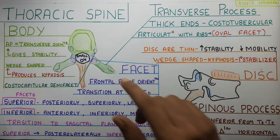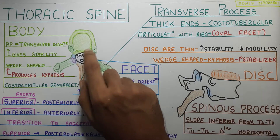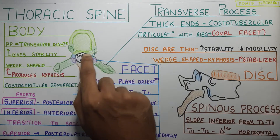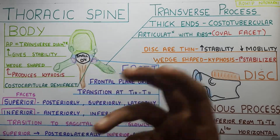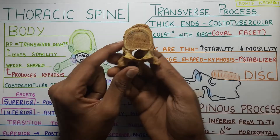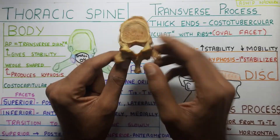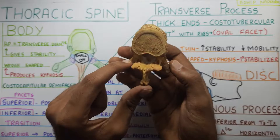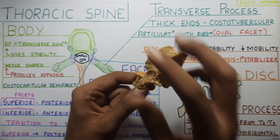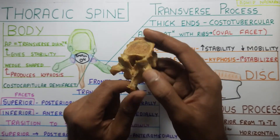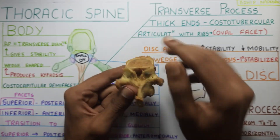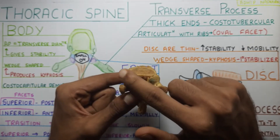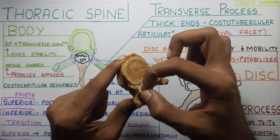I would also like to mention the pedicles, which are located posteriorly and are pretty thick. The lamina is also thick and broad in the thoracic region. The facets, on the other hand, are very thin and flat.